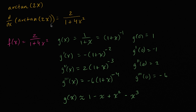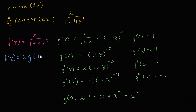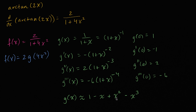Now the long-promised key insight: we can write f of x as 2 times g of 4x squared. Notice — replace the x's with 4x squared and you get 1 over 1 plus 4x squared, then multiply by 2 to get f of x. So f of x's power series representation is just taking the first four terms of g's power series, replacing x with 4x squared, and multiplying the whole thing by 2.